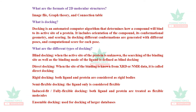The formats of 2D molecular structures include image files, graph theory, and connection tables. What is docking? Docking is an automated computer algorithm that determines how a compound will bind to its active site — the protein. It includes orientation of the compound, its conformational geometry, and scoring. Different confirmations are generated with different poses and a computational score for each pose.